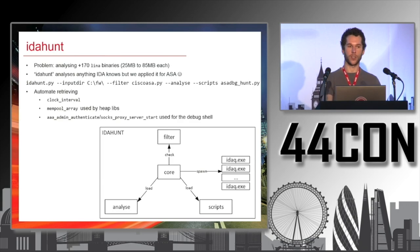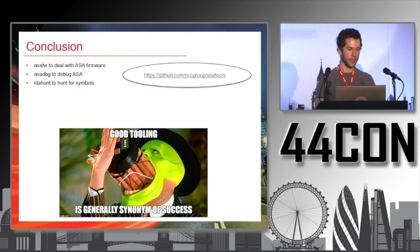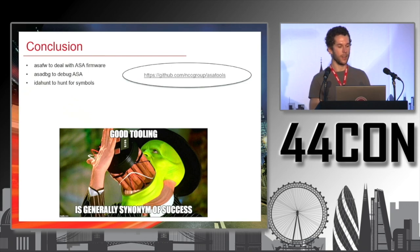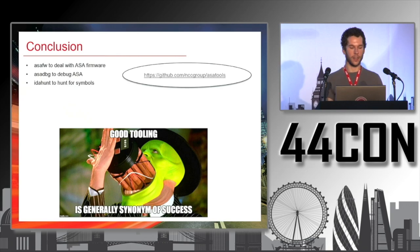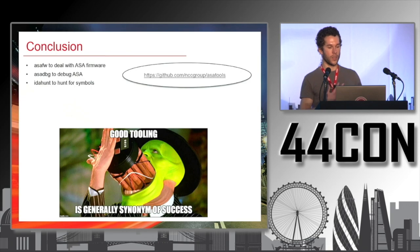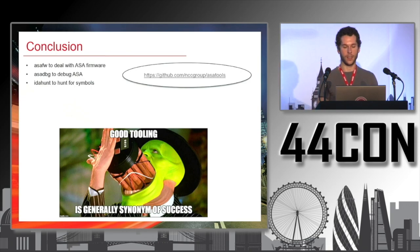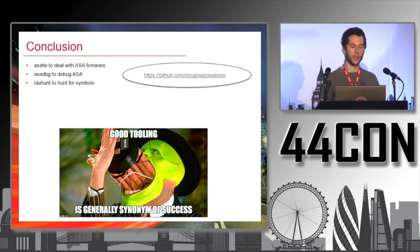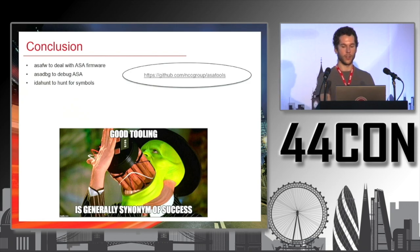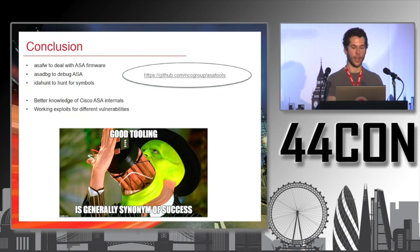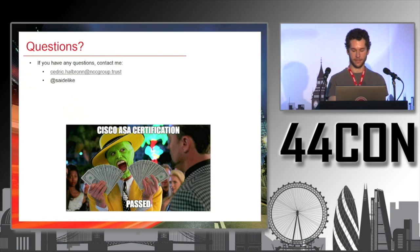In conclusion, I talked about three tools: one to deal with ASA firmware (unpacking, repacking, modifying), one to deal with debugging ASA (ASADBG), and IdaHunt to hunt for symbols in IDA — which is not specific to ASA but we used it for ASA. These tools have just been released. We used them to understand internals and to debug exploits. Thanks for attending.